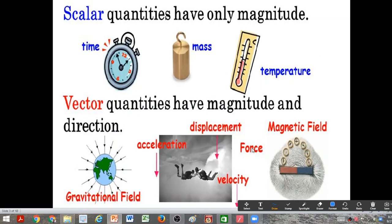So scalar quantities are physical quantities which have only magnitude. For example, as is shown in the slide - time, mass, temperature - these are physical quantities which only have magnitude. We don't need to specify the direction, right?